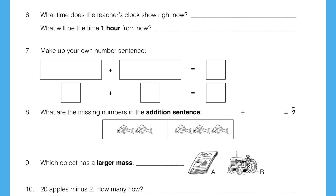Question 8. What are the missing numbers in the addition sentence? Something plus something equals 5. You've got illustrations there with fish to give you a hand.